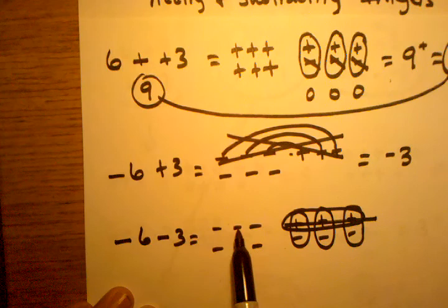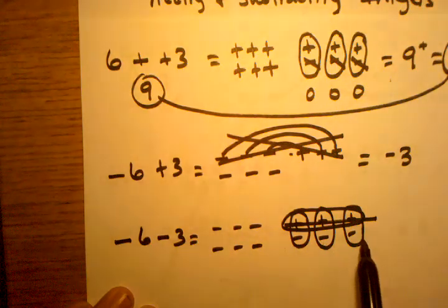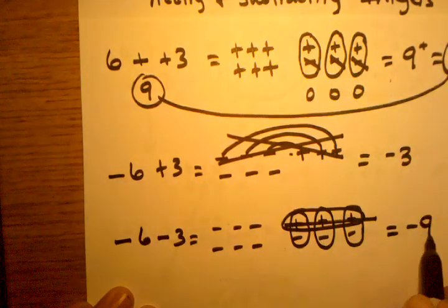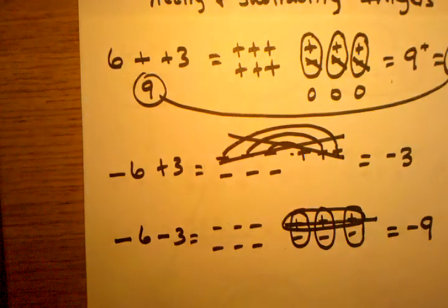And what I have left over is one, two, three, four, five, six, seven, eight, nine. And here I have negative nine as my answer because I have nine negative signs left over. Thanks for listening.